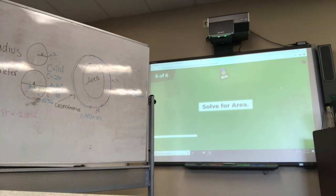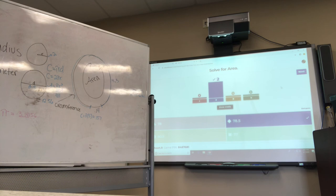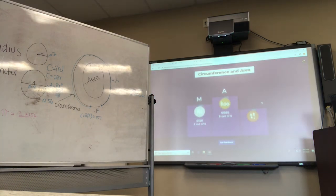Here is the last question. Solve for area. Good, the answer would be 78.5. Awesome. And A is our winner. That would conclude the lesson.